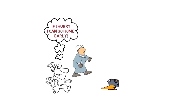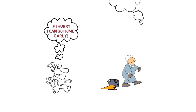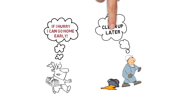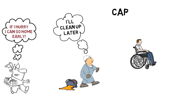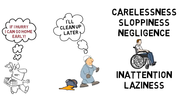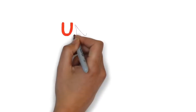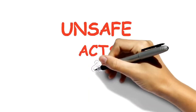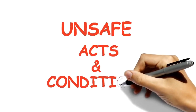People cause accidents. To be more exact, people not paying attention or doing something that they shouldn't be doing causes accidents. Accidents result from varying degrees of carelessness, sloppiness, negligence, inattention, neglect, and ignorance. Accidents also happen where two things are found: unsafe acts and unsafe conditions.